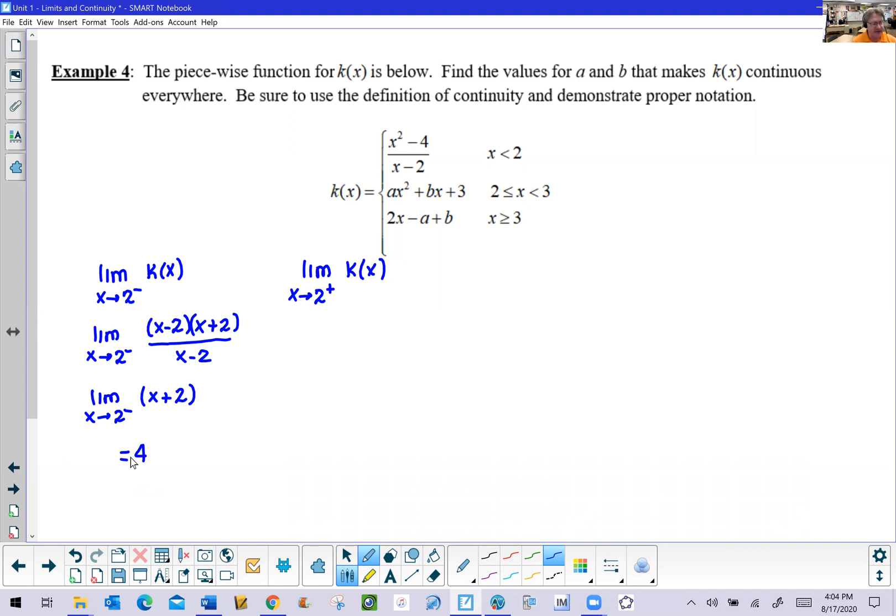Now if we move to the middle function as x approaches 2 from the right side, we are then basically going to be able to green light once again. Because the function for k of x is just this arbitrary ax squared plus bx plus 3. But as soon as we green light and plug that 2 in for x, now make sure that you know that that 2 does replace x, we would have 4 times a plus 2 times b plus 3. Now what do we know about these two limits? Well if we want this function to be continuous, we know that these two limits are going to have to equal each other. So immediately we're going to set 4a plus 2b plus 3 equal to 4, and we know that is a fact.